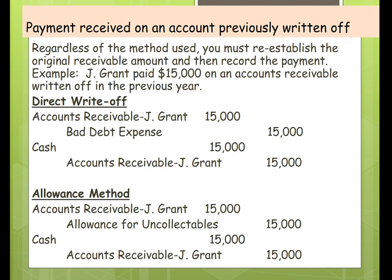Before going through the three methods, we need to address what happens if an account previously written off is later paid. Regardless of the method used — direct write-off or either allowance method — you must always first re-establish the accounts receivable and then show the payment. For example, Jay Grant paid $15,000 on an account written off in the prior year. Under the direct write-off method, we debit accounts receivable and credit bad debt expense, then record the cash. Under the allowance method, we debit accounts receivable and credit allowance for uncollectibles, then record the cash.